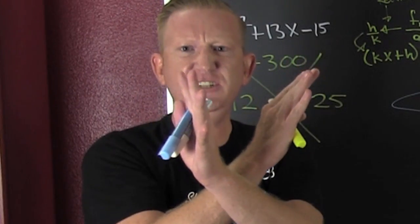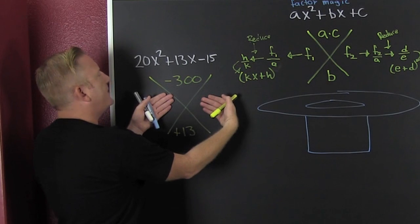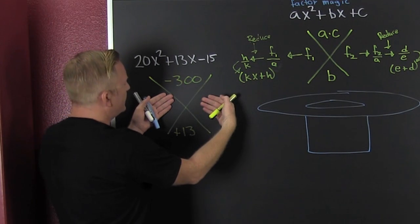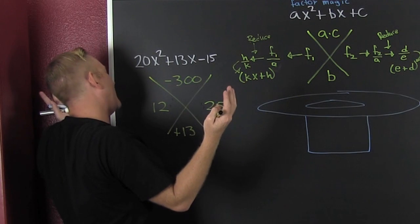We're looking for the factors of 300 that subtract to be 13. It's the extreme factoring. So then pretend I didn't write that there. The factors of 300 that subtract to be 13 are 12 and 25. Check it.